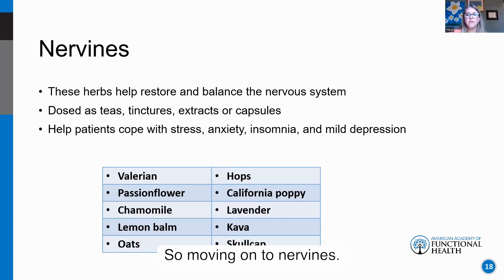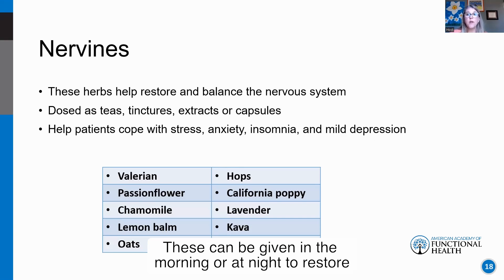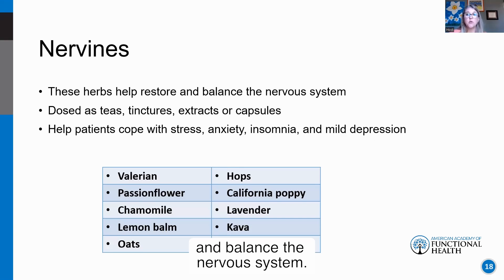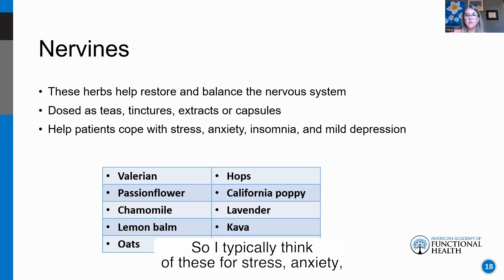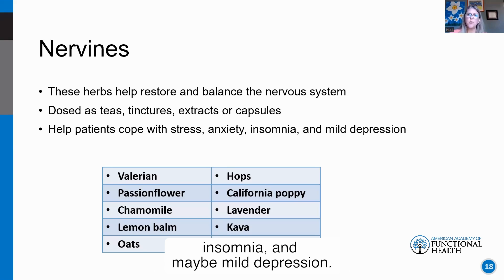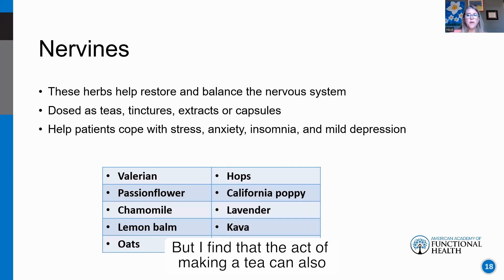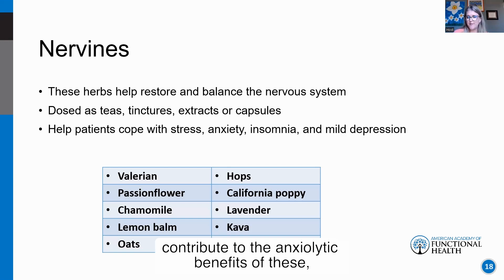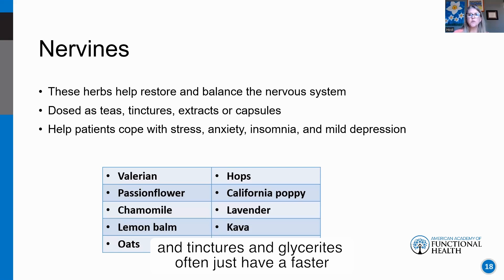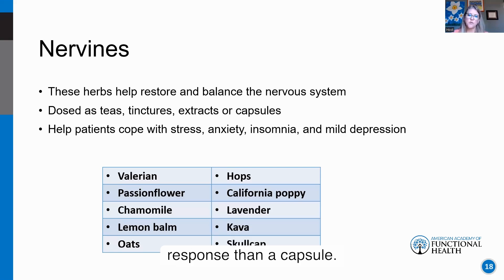Nervines can be given in the morning or at night to restore and balance the nervous system. I typically think of these for stress, anxiety, insomnia, and mild depression. You can find combinations in a tea, tinctures, glycerides, or capsules. The act of making a tea can also contribute to the anxiolytic benefits, and tinctures and glycerides often have a faster response than capsules.